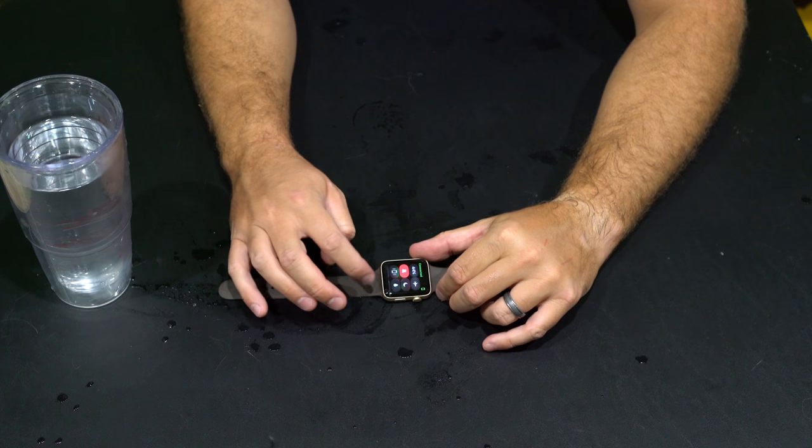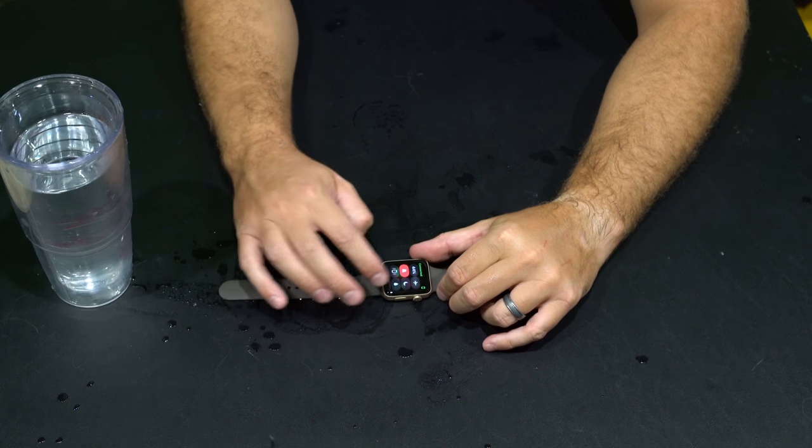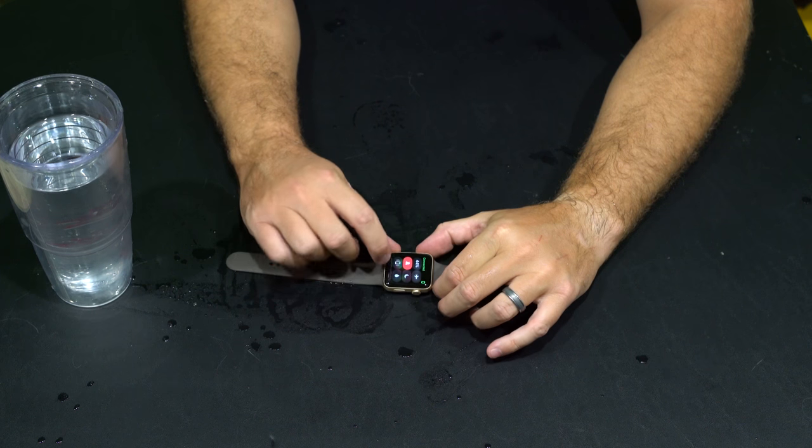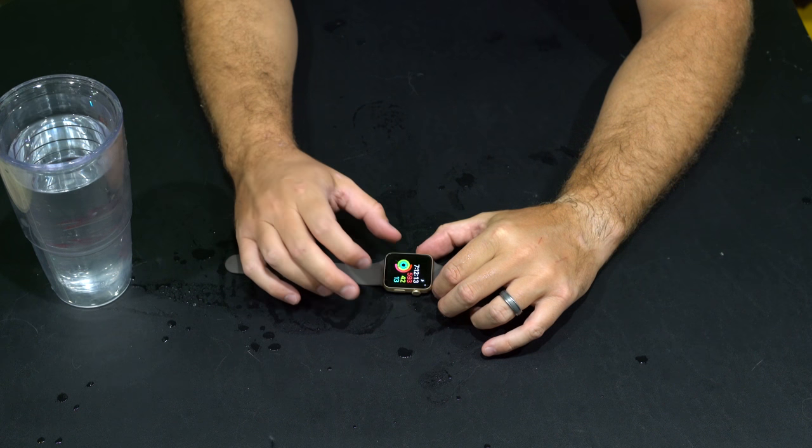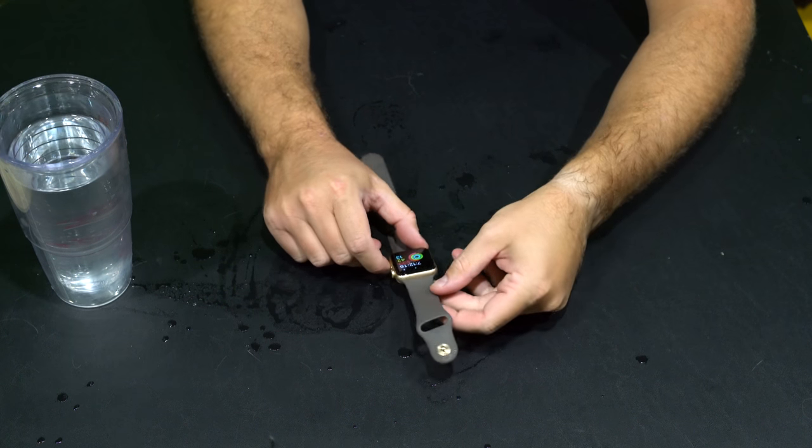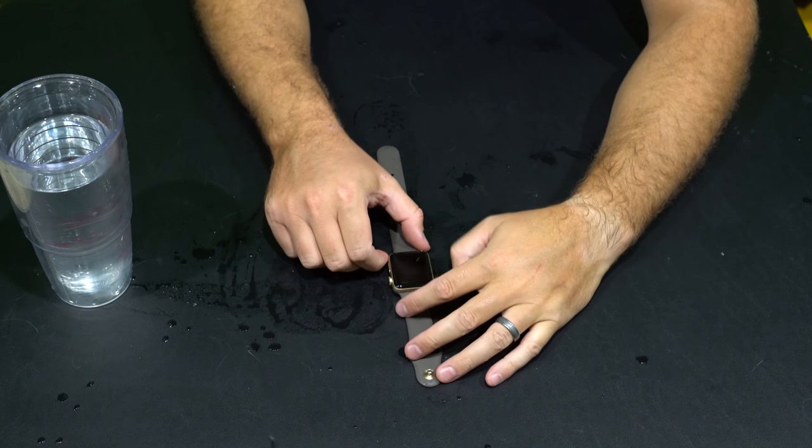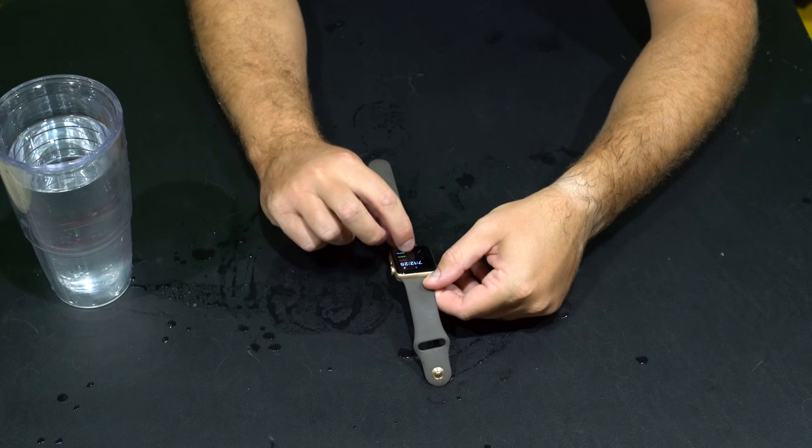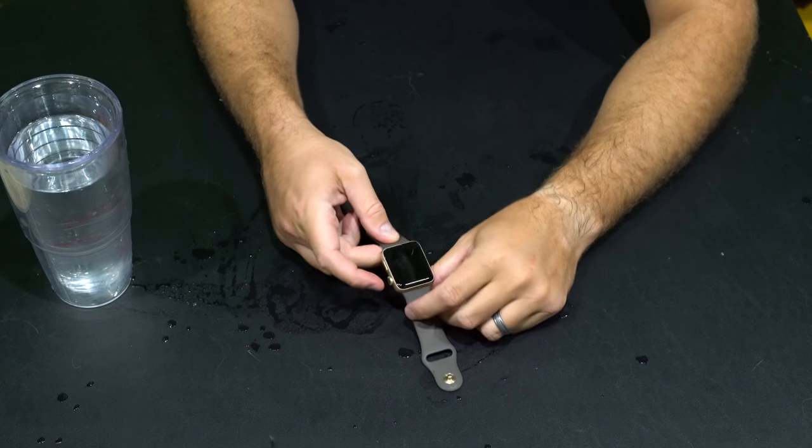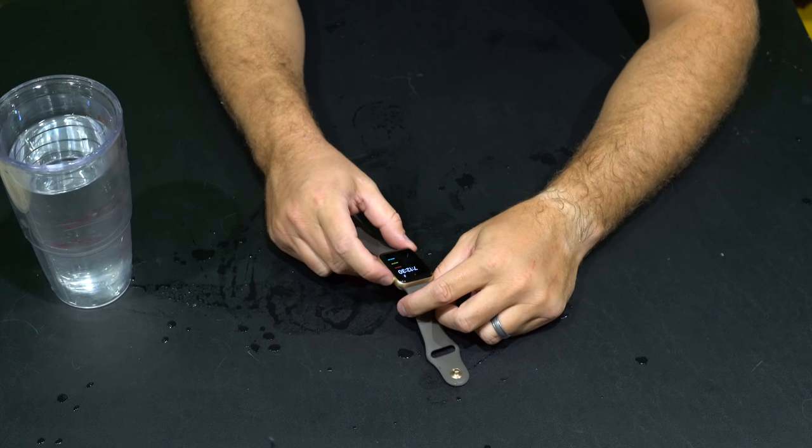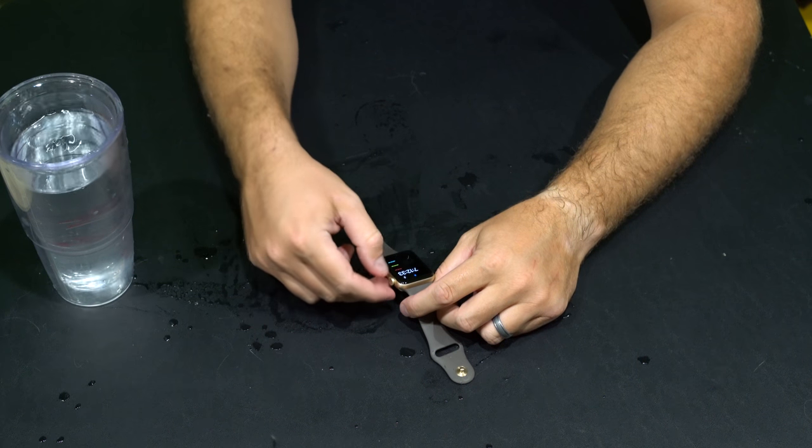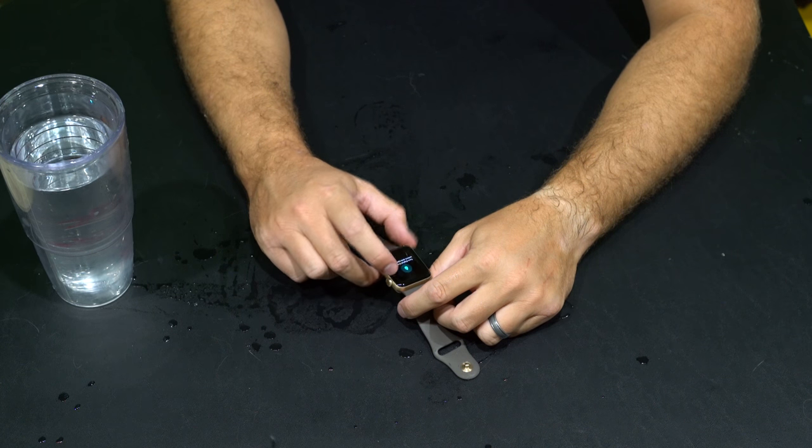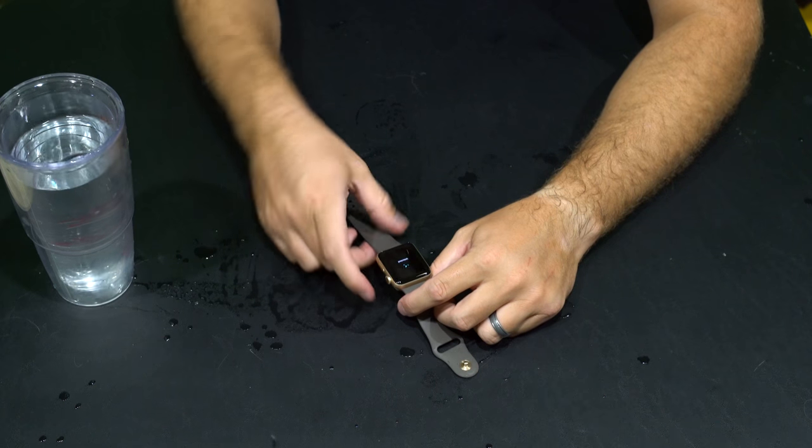And again, this is the Apple Watch Series 2. So if you've got Apple Watch 1, I don't think this will be there, but it looks like a water drop. So we're going to hit the water drop icon. Nothing's happened yet. It says turn digital crown. Okay, so I had to push. Turn digital crown.